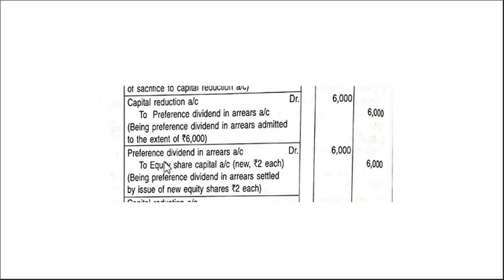We are issuing new equity shares to settle the preference dividend arrears. The journal entry is: Debit Preference Dividend in Arrears Account ₹6,000; Credit Equity Share Capital Account ₹6,000. This new equity share capital will appear in the new balance sheet. So the first step is making the payment, and the second is issuing new equity share capital to the preference shareholders in the form of dividend settlement.